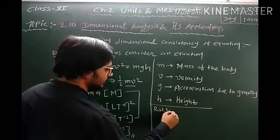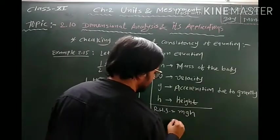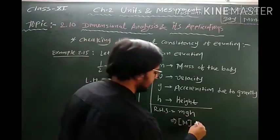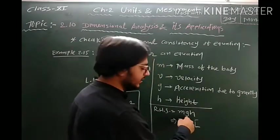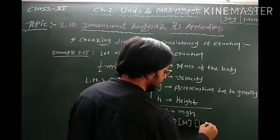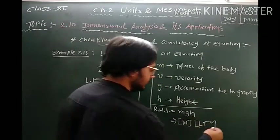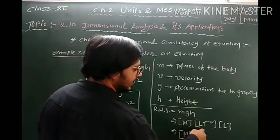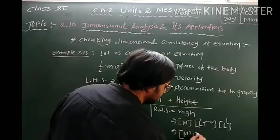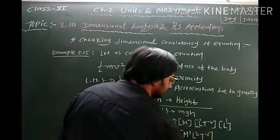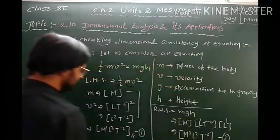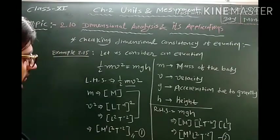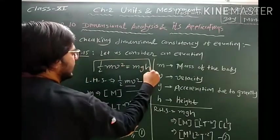The RHS is mgh. M is measured in kilograms, so its dimension is M. G is gravitational acceleration, measured in meter per second squared, so its dimension is L·T⁻². From equations 1 and 2, we can see that both sides are dimensionally the same. We conclude that this equation is dimensionally correct.